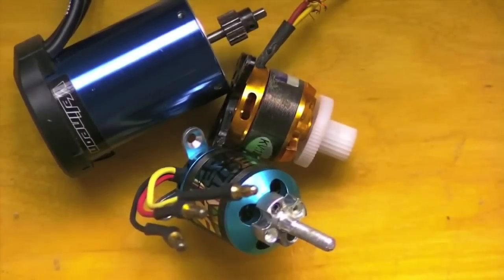Brushless motors come in two types: in-runners, like this one, and out-runners, like these.